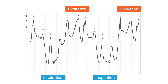Now we have identified the wedge tracing at end expiration, but we have several waves to decipher. We use PCWP as a surrogate for left atrial pressure, so we're interested in the A wave. You can use a cursor on the monitor to find the middle of the A wave, and this is the pressure you want. In this example, the middle of the A wave corresponds to seven millimeters of mercury, which is in the normal range.